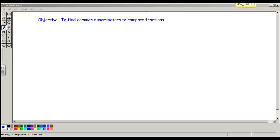Today we're learning how to find common denominators to compare fractions. We're going to start over here. If we have these two fractions, 3 tenths and 7 25ths,